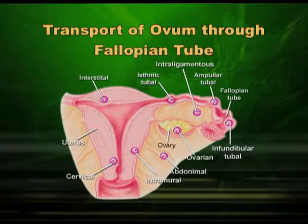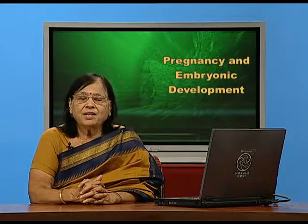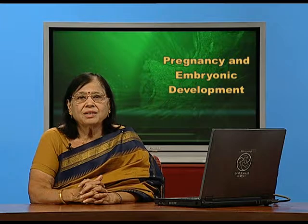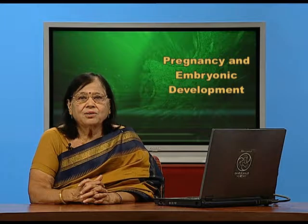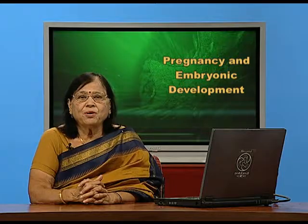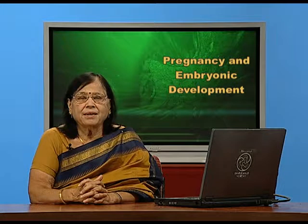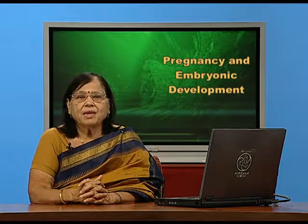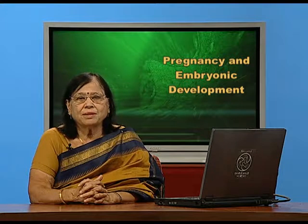The point where it touches the endometrium of the uterus, at that point the placenta will be formed. A cord will also be formed, which will be a bridge between the mother and the fetus. It will supply nutrition and oxygen to the fetus and also carry back excretory matter and carbon dioxide from the fetus to the mother.